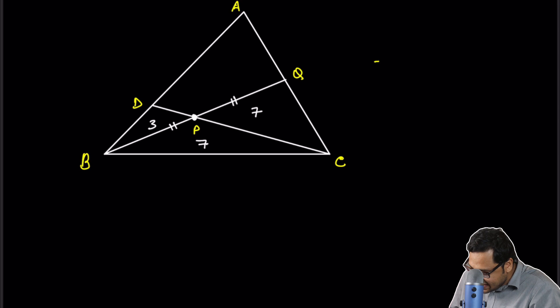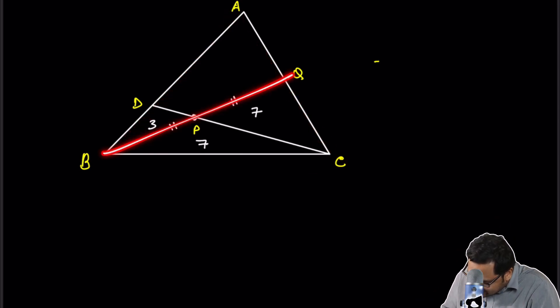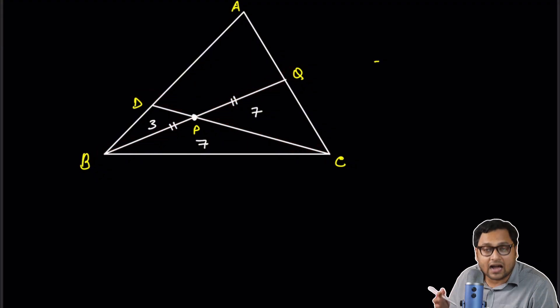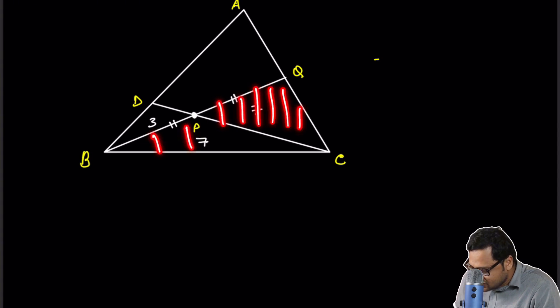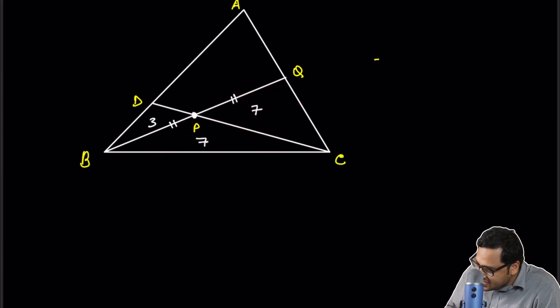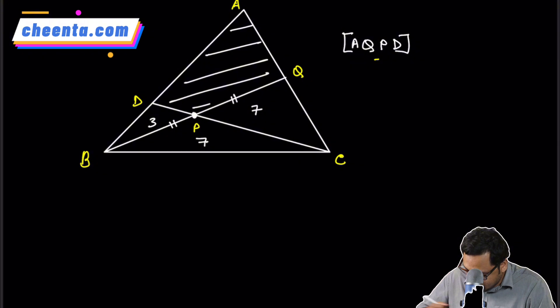We have a triangle ABC and BQ and CD are two lines intersecting at P such that this area is 3, this area is 7 and this much is also 7. We are required to find out the area of the shaded region. So find the area of AQPD. How can we go about doing this? First we make some observations.